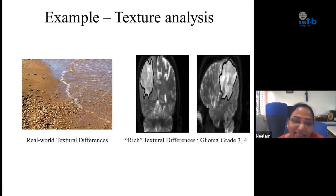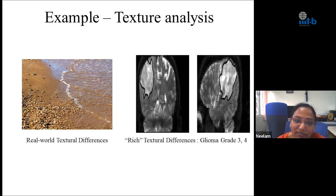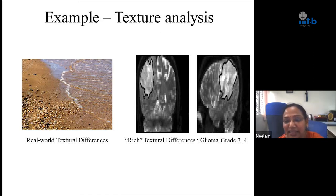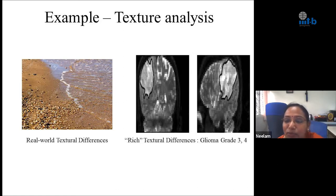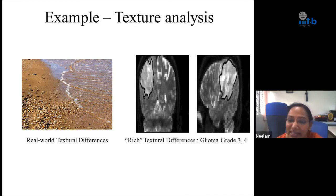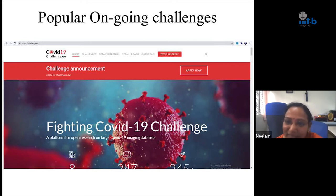Yet another example is texture analysis. In real-world images, distinguishing fine sand from coarse pebbles is easy and doesn't need a trained eye. Whereas in medical images — for example, MR scans of the brain where you are told this is glioma grade 3 and this is glioma grade 4 — there are rich textural differences, but it's not easy for the layman to see them or convert these differences so that classification becomes simple.